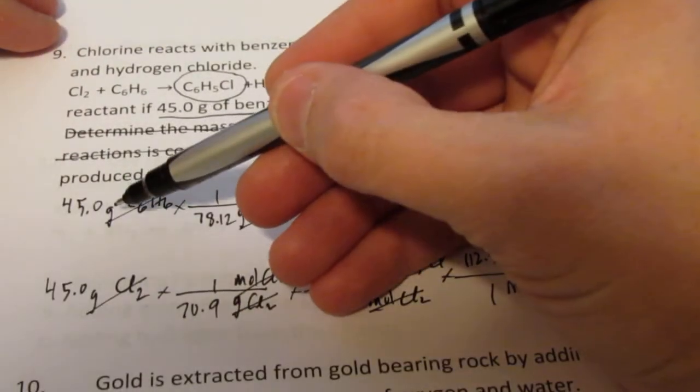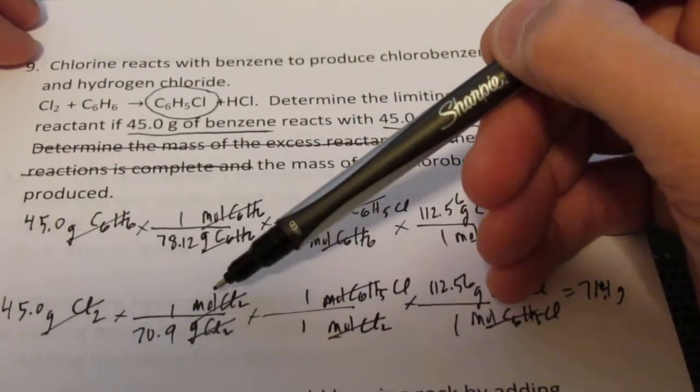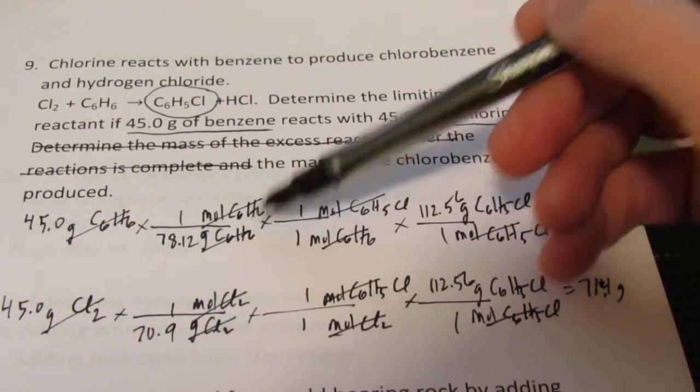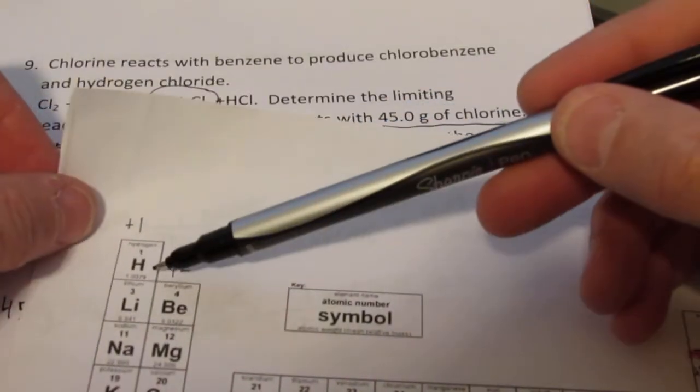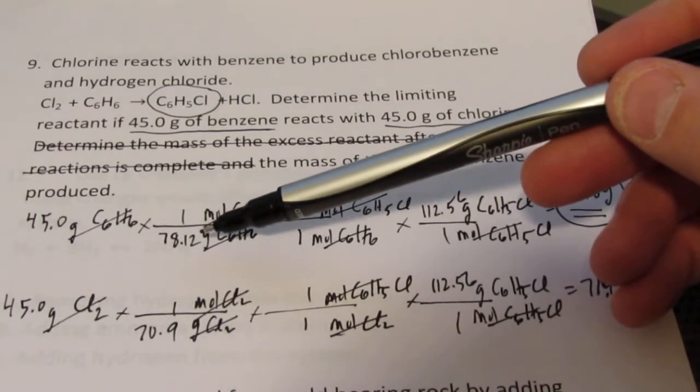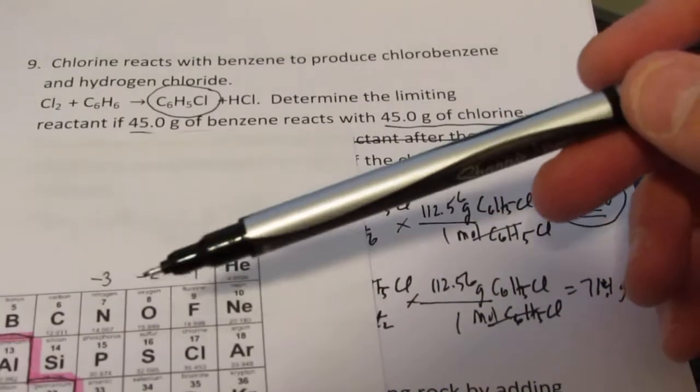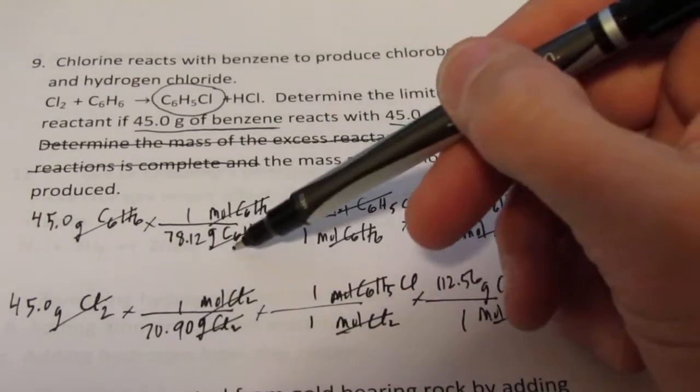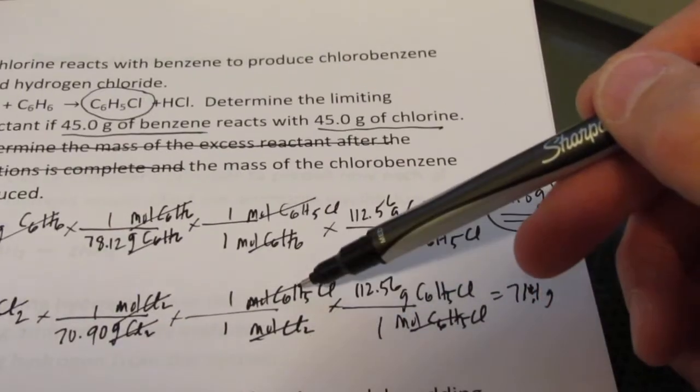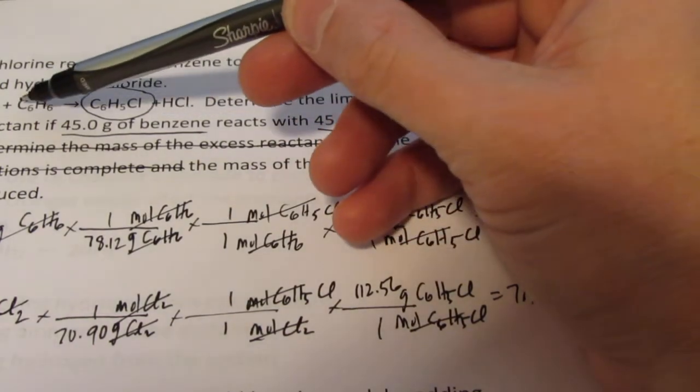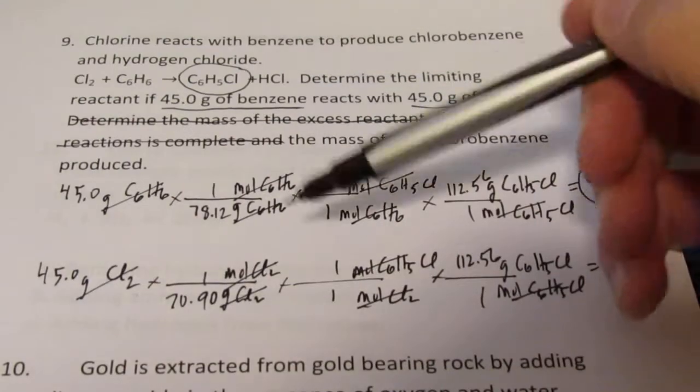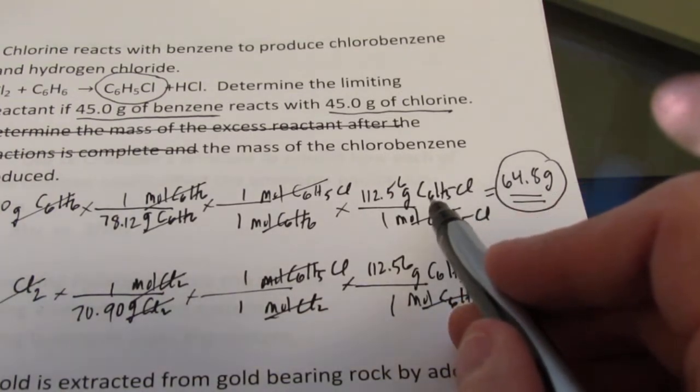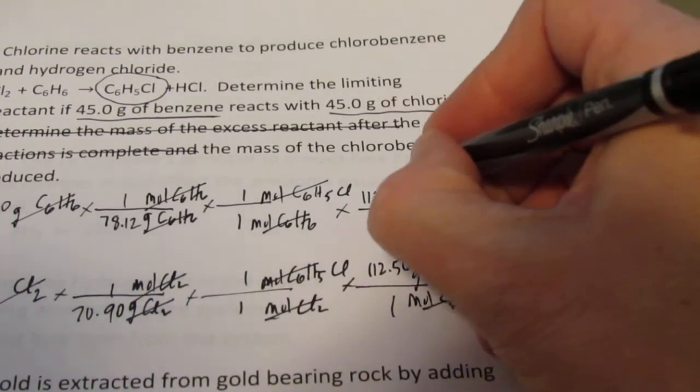So, I'm starting with 45 grams of each reactant, and you'll notice I go from grams to moles of each reactant. I found these molecular weights using the periodic table. Six carbons and six hydrogens - each carbon weighs 12.01, each hydrogen weighs 1.01. When I add those together, I get 78.12 grams per mole. And Cl₂, each chlorine weighs 35.45, so two of them would weigh 70.90. So we'll go from grams to moles of each reactant, and then from moles of reactant to moles of product, which is chlorobenzene. You'll notice these are both one-to-one ratios.